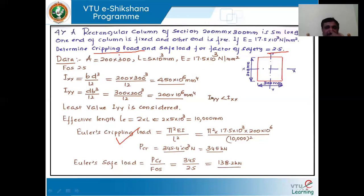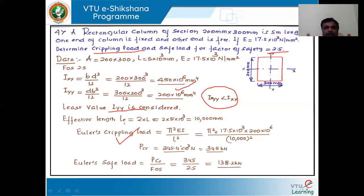First let us find the moment of inertia. Ixx along the x-axis is Bd cubed by 12, that is 200 into 300 cubed by 12. Along the y-axis, Db cubed by 12, that is 300 into 200 cubed by 12. Since the moment of inertia along the y-axis is less than along the x-axis, the least value is considered. Effective length is 2L, where L is the actual length, giving 10,000 mm. Using Euler's crippling load equation pi squared EI by Le squared, substituting all values, we get the crippling load as 345 kilonewtons. Dividing by the factor of safety gives the Euler's safe load of 138.2 kilonewtons.